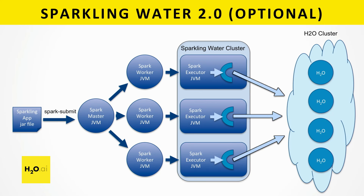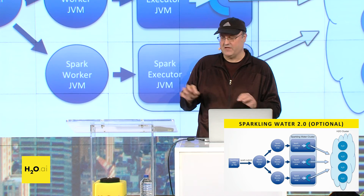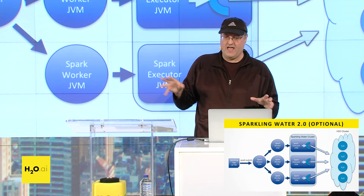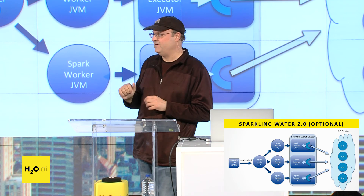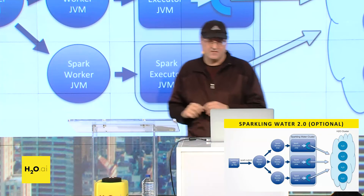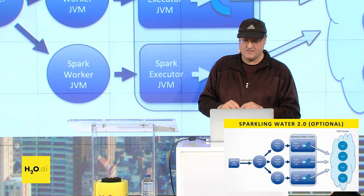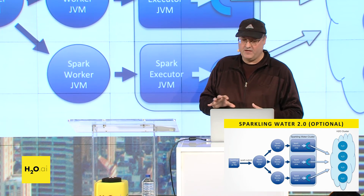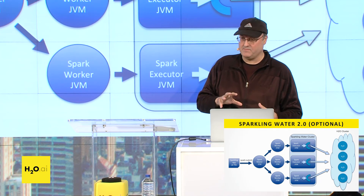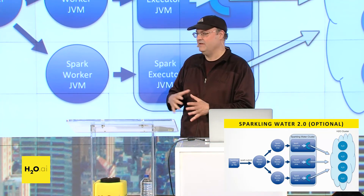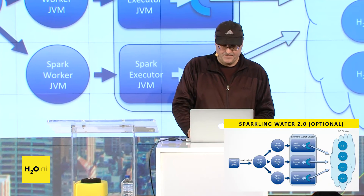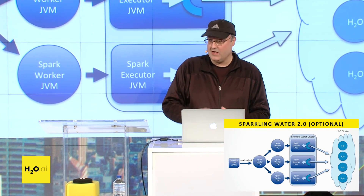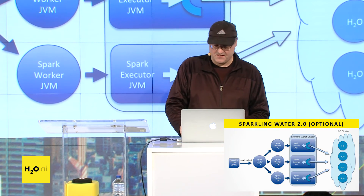If those stubs come and go, it doesn't affect the stability of the H2O cluster. For those of you that have tried this on really big data and had issues, this will fix that. This is a new architecture feature in Sparkling Water 2.0, which will be based on top of a not-yet-released version of H2O.